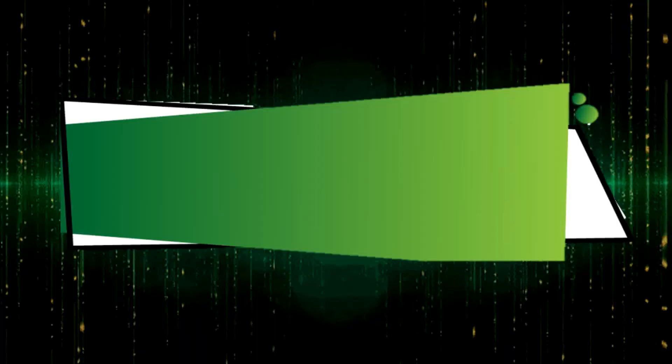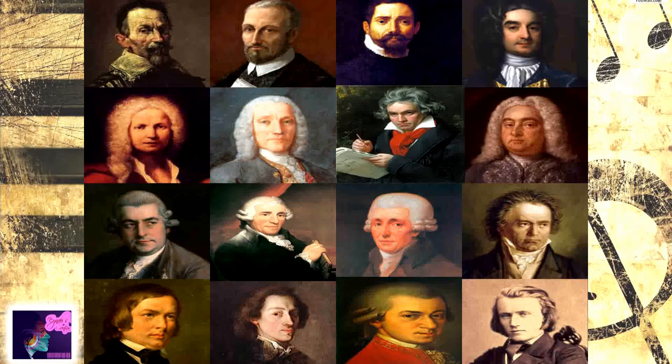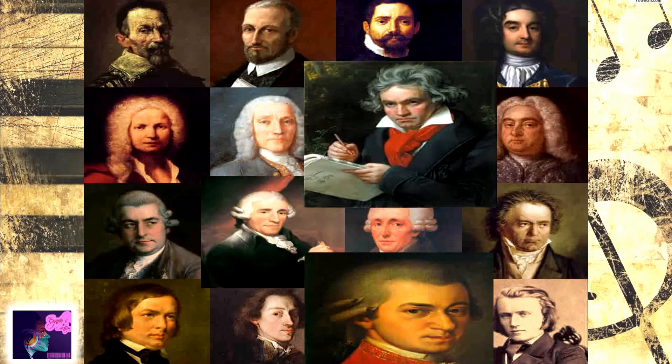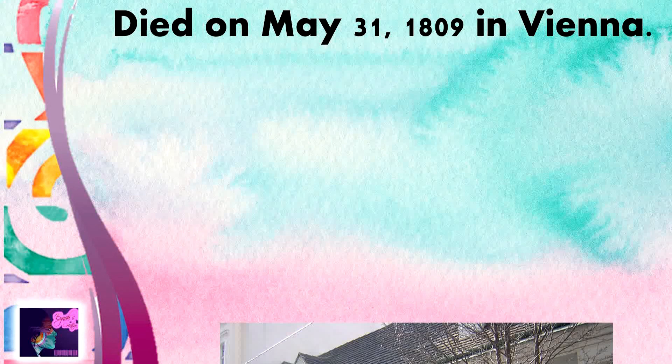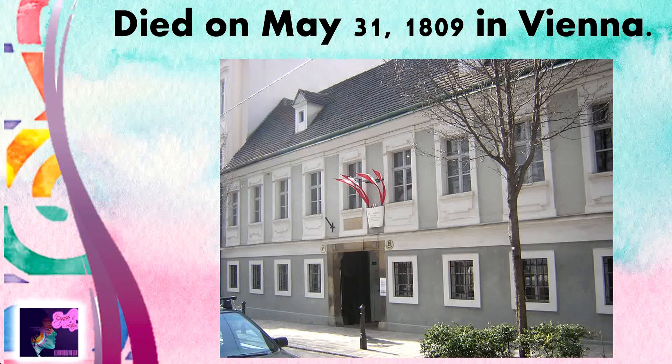Let's now meet the greatest composers during the period. There were a lot of composers during the classical period, but there are three who stood out. Starting with our first featured composer, Franz Josef Haydn. He was born on March 31, 1732, in rural Austria, and he died on May 31, 1809, in Vienna, Austria.